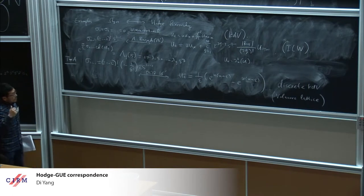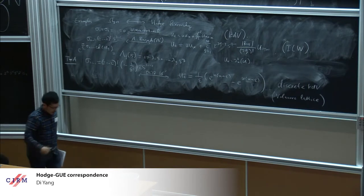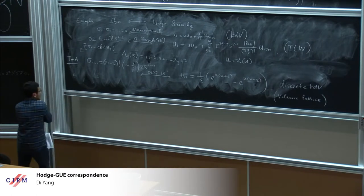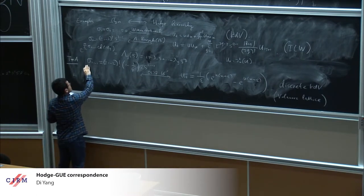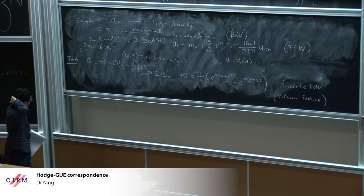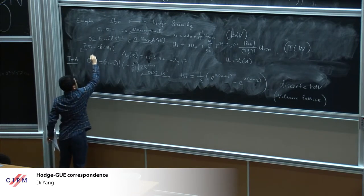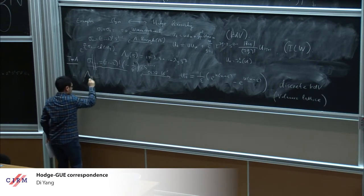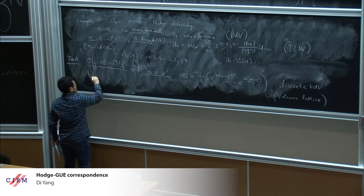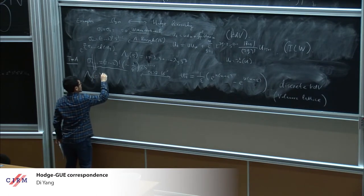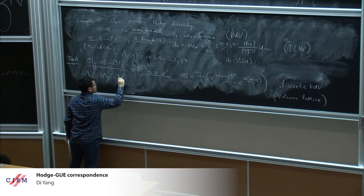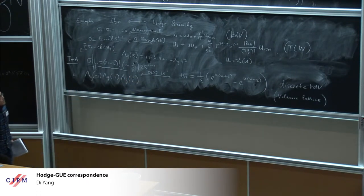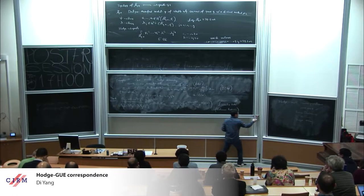You can also use the relationship between Schur functions and elementary symmetric functions to find that under this substitution, the Chern character becomes a product of three Chern polynomials. This is what we are going to prove today.